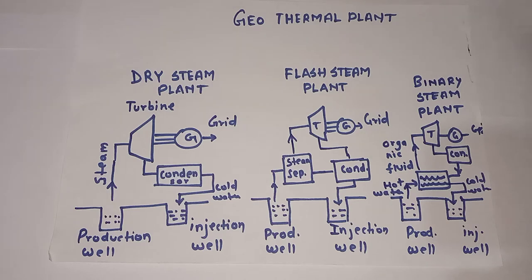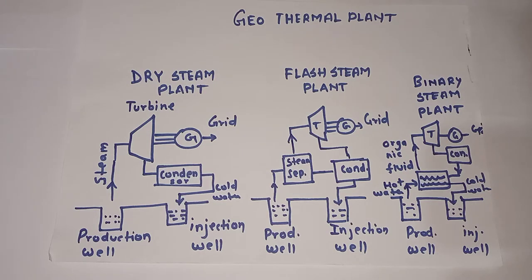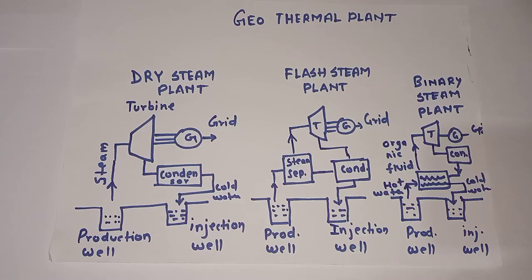Today we'll discuss geothermal plants, one type of renewable energy technology used for converting thermal energy to electrical energy from substances in the subsurface of the earth. Some hot liquid magma or steam coming out from the surface — that thermal energy we can convert to electrical energy using geothermal plants. There are three types of plants shown in the diagram here.